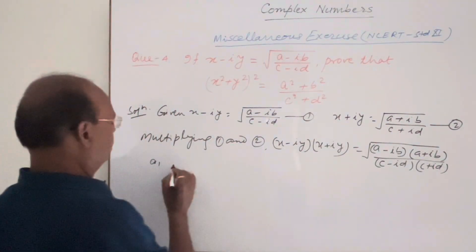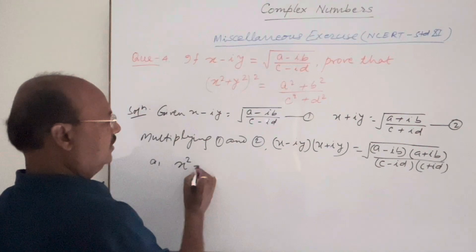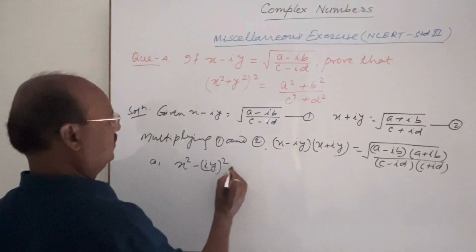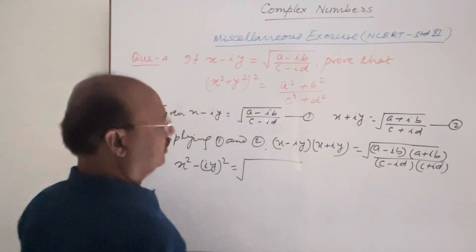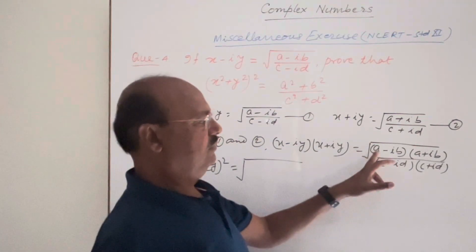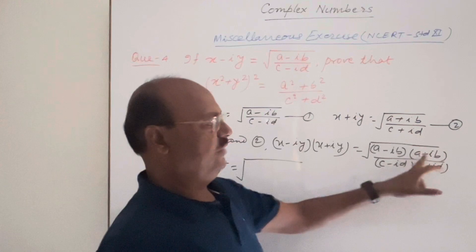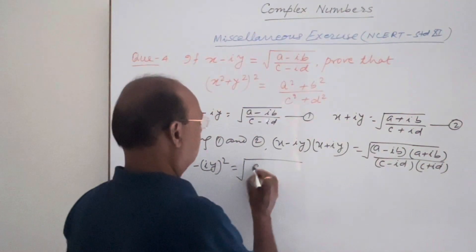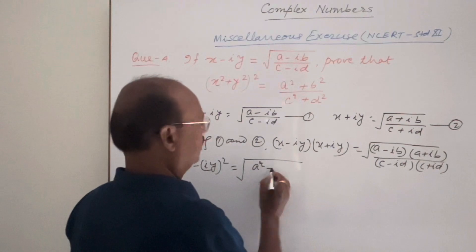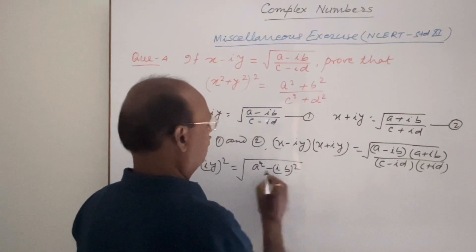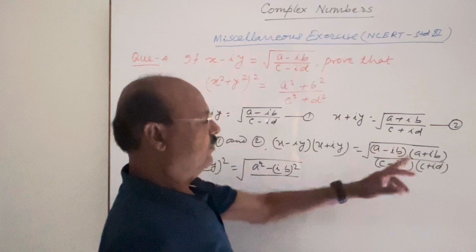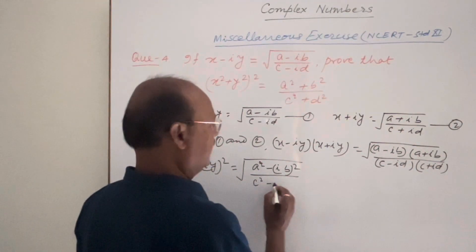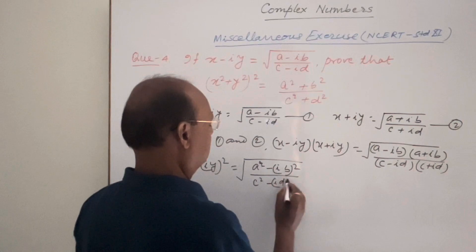So left hand side will be x square minus iy whole square. And in right hand side here also this is in the form of x minus y into x plus y, that is x square minus y square. So this is a square minus ib whole square. Similarly in denominator also this is c square minus id whole square.